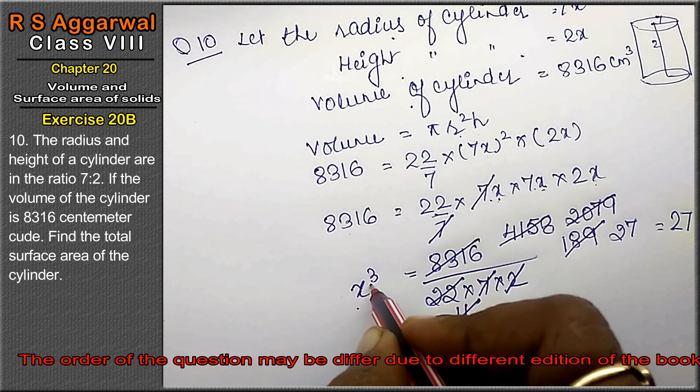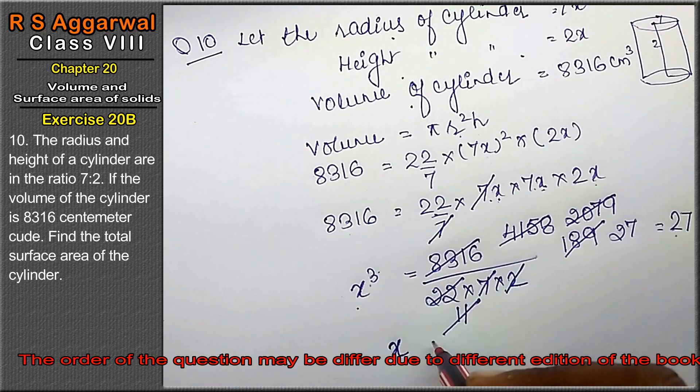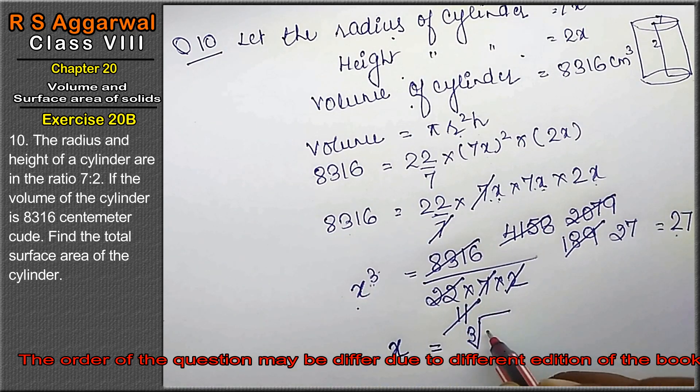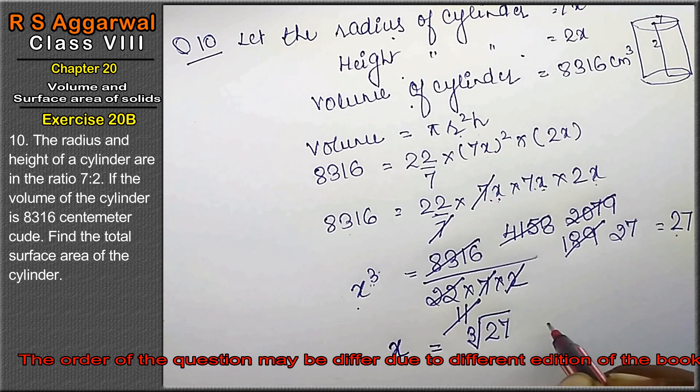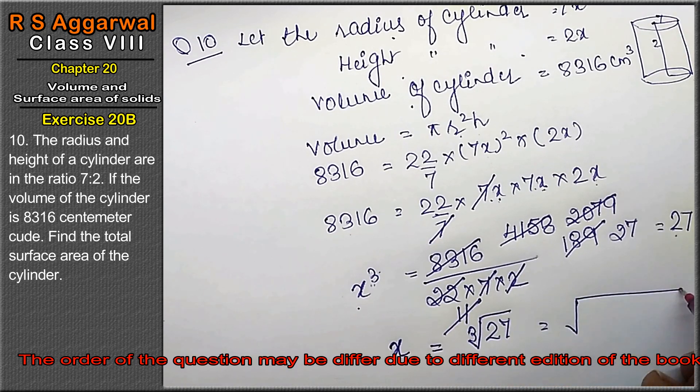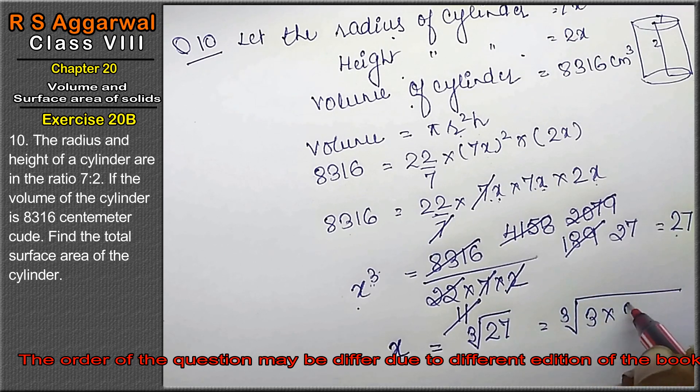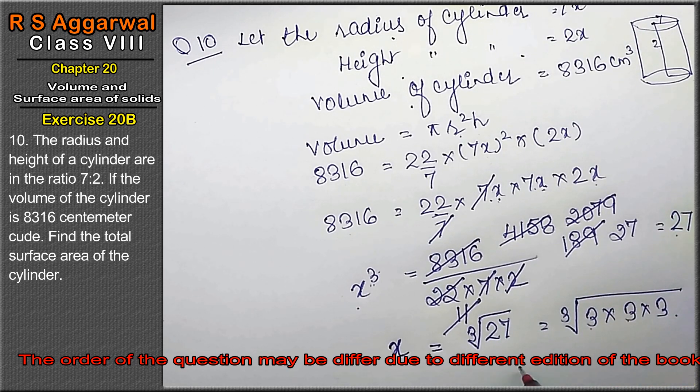Friends, so x³ equals 308 times x³ equals 8316. So x³ is 27. So x is how much? That is, here is the cube, so it will change to cube root. Cube root of 27, so what do we call 27? 3 into 3 into 3. 3 times 3 is 9, times 3 is 27. So x equals 3.